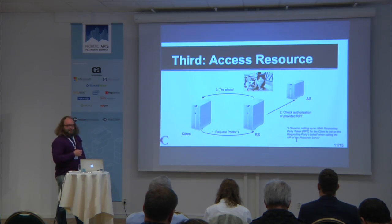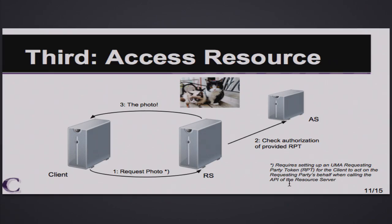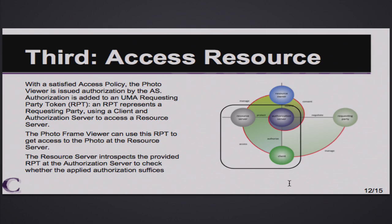The final stage is the actual access. With the authorization set up, the photo viewer — the client — has the authorization token to use at the resource server to get the photo. But when providing the token that carries the authorization data, the resource server actually needs to introspect the permissions with the authorization server to verify whether the authorization is valid. So the authorization server is a point where authorization is both provided and verified. Once that's confirmed, the photo is retrieved and the resource can be used.